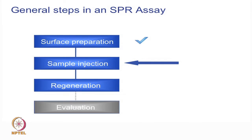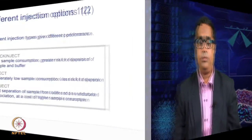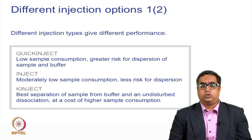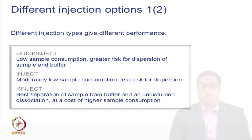The next important step is sample injection. The way molecules are injected depends on the molecular interaction process. For screening, there is a slow injection; for kinetics, a certain flow rate is used. The different injection modes are called quick inject, kinject, and inject. The mode changes based on whether you are doing screening, kinetics, or thermodynamics, and the injection process and contact time change accordingly.